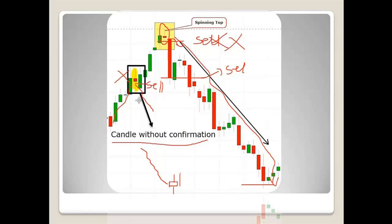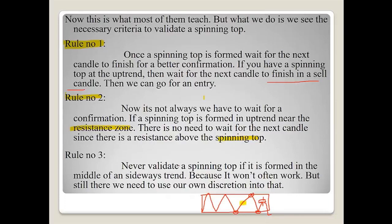In the same scenario, if the market is coming down and you have a spinning top at the bottom of a downtrend, you wait for the next candle. If the next candle is bullish, you can go for a buy. If the next candle is bearish, the trade will be invalid. So whenever you see a spinning top, use these rules — wait for the next candle. Rule number two also applies: if formed near support or resistance, we'll cover that in the later part.